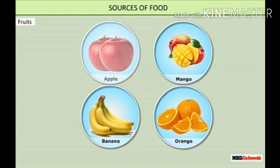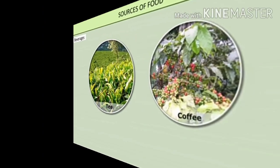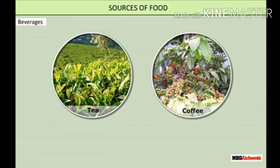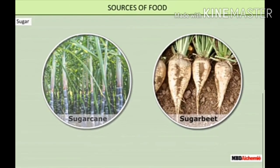The next category is fruits. We have eaten apple, mangoes, bananas, and oranges — these are fruits obtained from plants used in our daily food. The next is spices — every day for cooking we use different types of spices like turmeric, ginger, chili, cardamom, etc. The beverages we use in daily life are tea and coffee. We also obtain oil from seeds of different plants, for example mustard seeds, sunflower seeds, groundnut seeds, and soya bean seeds.